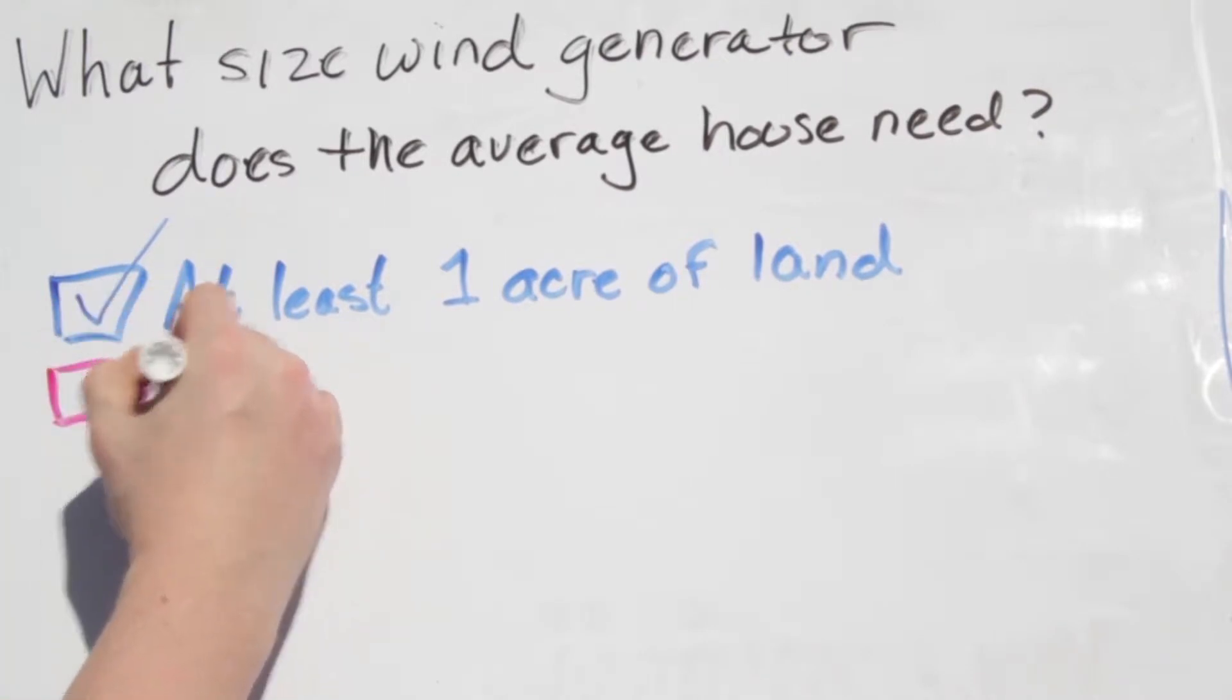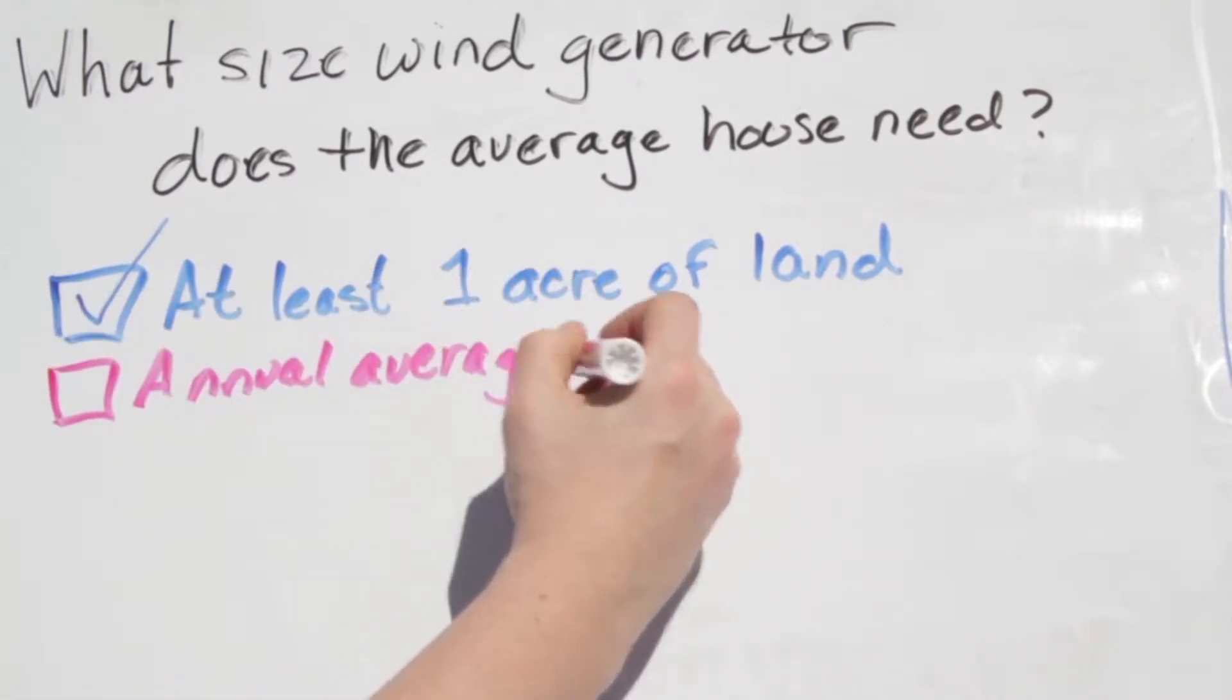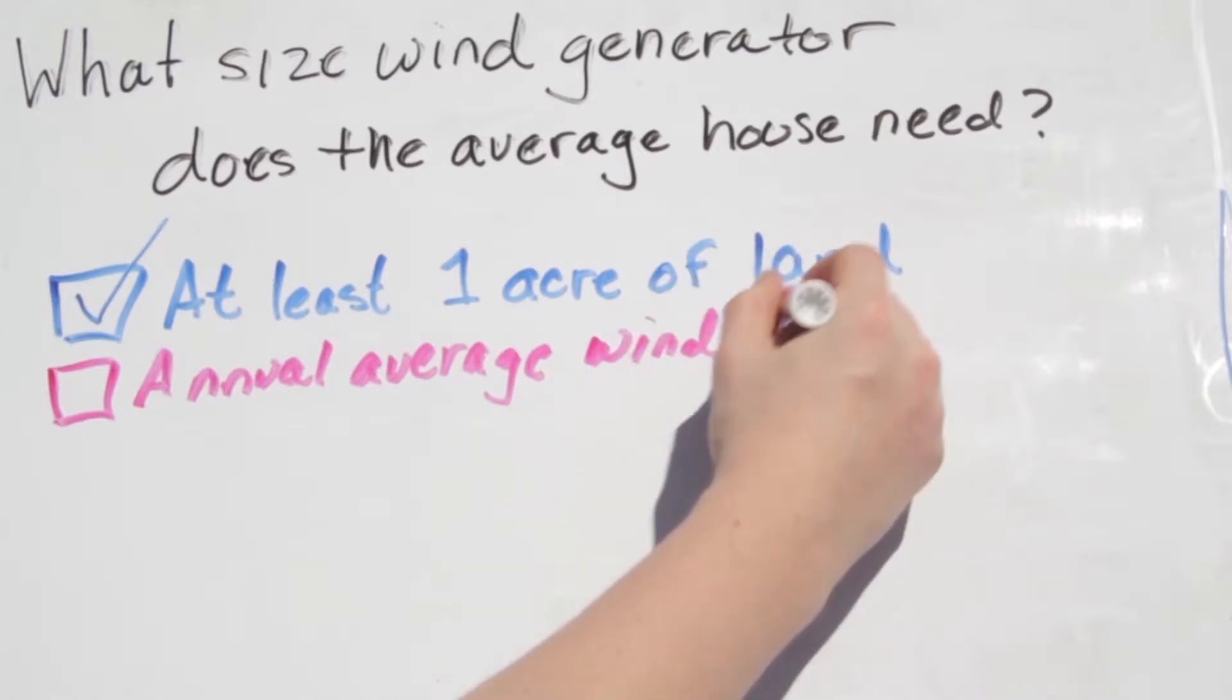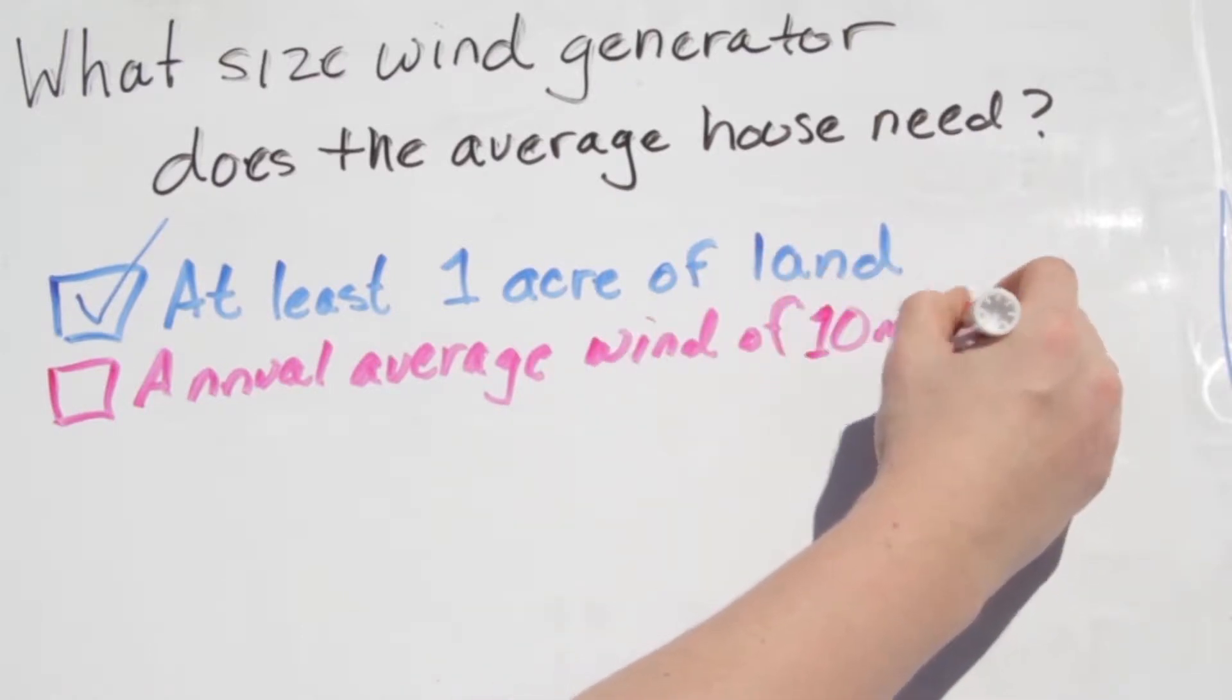Second, do you have enough wind? The Department of Energy says small wind generators start to make sense with an annual average wind speed of about 10 miles per hour.